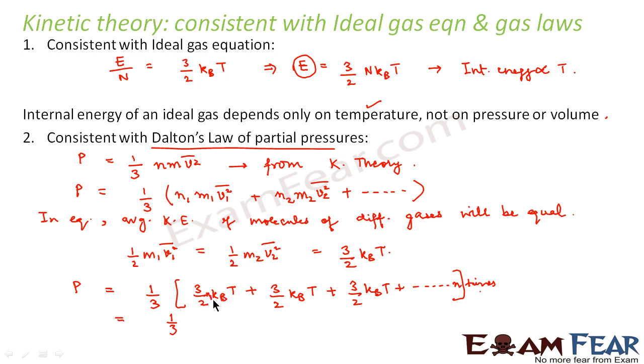So it will be 3/2 n₁ kB T, 3/2 n₂ kB T, 3/2 n₃ kB T and so on. So this 3 and 3 will get cancelled. So we will get kB T into (n₁ + n₂ + ...). Now what is this kB? kB is nothing but R/N_A by definition, right? Because universal gas constant R is equal to kB into N_A.